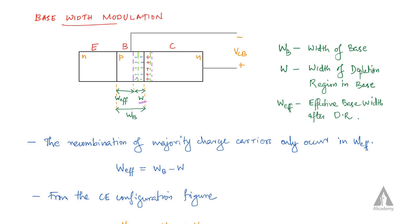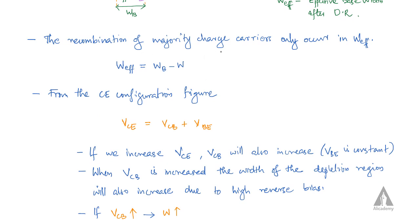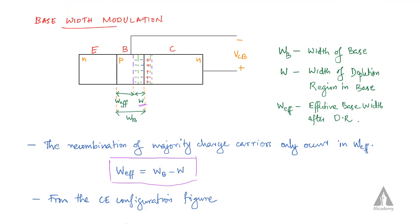Majority charge carriers are available for recombination only in the region outside the depletion region. This effective region is W_effective, which is the effective base width after the depletion region forms. Recombination of majority charge carriers occurs only in W_effective, which equals WB minus W.